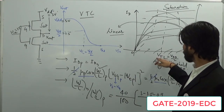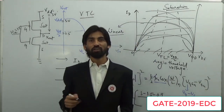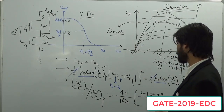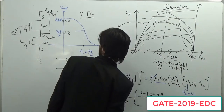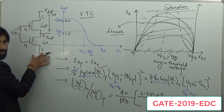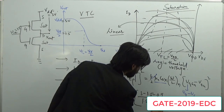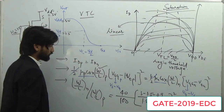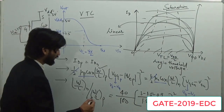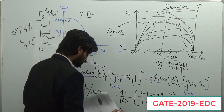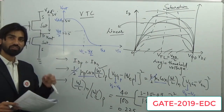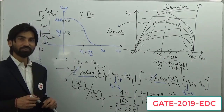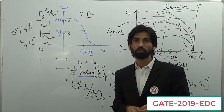We calculate: (W/L)_N / (W/L)_P = [μp·Cox · (VSG - |VTP|)²] / [μn·Cox · (VGS - VTN)²] = [40 × (1.5 - 0.9)²] / [100 × (1.5 - 0.7)²] = [40 × (0.6)²] / [100 × (0.8)²] = [40 × 0.36] / [100 × 0.64] = 14.4 / 64 = 0.225. So the ratio is 0.225.